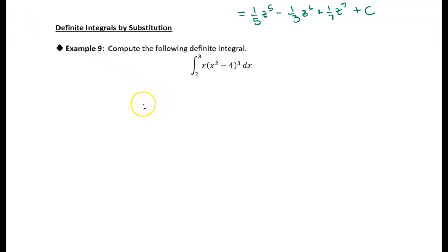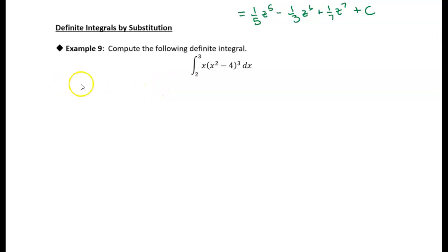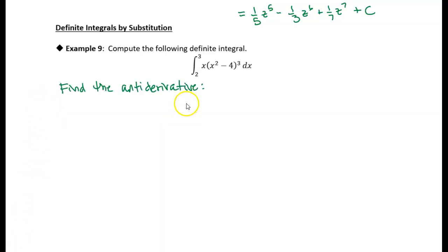We've got one more example, and this involves a definite integral. This is fairly straightforward, though there are actually a couple ways that we could approach this problem. One is that we could just find the antiderivative and then apply the limits of integration. So let me show you that method first — we're going to find the antiderivative, which means we want to find the indefinite integral of this function.